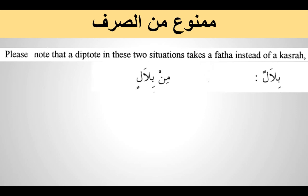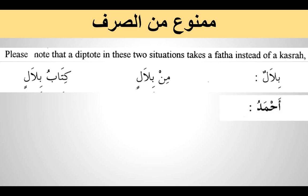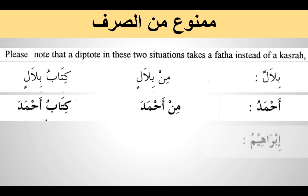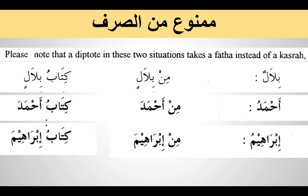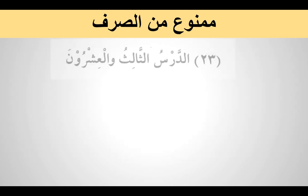So for example, if it is a regular noun, Bilalun becomes min Bilalin or Kitabu Bilalin. But if it is Ahmadu — which is a diptote on the af'alu pattern — we say min Ahmada, not min Ahmadi. It is min Ahmada, or Kitabu Ahmada. Similarly, Ibrahima has a single dammah, so we have min Ibrahima and Kitabu Ibrahima. That is how the mamnu' min al-sarf takes the majroor form. Now we come to our main lesson, Lesson 23, al-Darsu al-Thalithu wal-'Ishrun from Medina Book 1, insha'Allah.